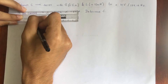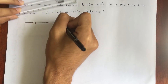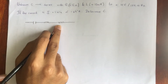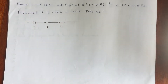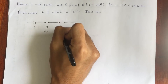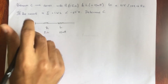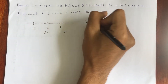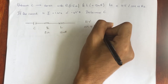Before solving, let's draw a diagram and mark all the given data. There is a capacitor, a resistor, and an inductor in series, so we write C, R, and L. The resistor is 5 ohm and the inductor is 10 micro henry. The total voltage across these three elements is 10 volts, and the frequency given is 159.16 hertz.